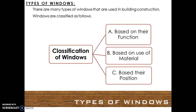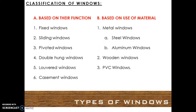Types of windows. There are many types of windows used in building construction. Windows are classified based on their function, based on their use of material, and based on their position. The classification of windows based on their function includes: fixed windows, sliding windows, pivoted windows, double hung windows, louvered windows, and casement windows.